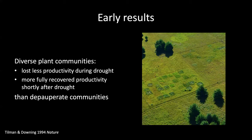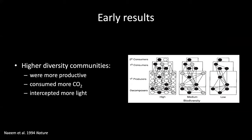Two high-profile early studies were published in Nature in 1994. One study by Dave Tilman and John Downing found that diverse plant communities lost less productivity during a drought and more fully recovered productivity shortly after, compared to species-poor plant communities — based on a reanalysis of data from a fertilization experiment at Cedar Creek. In the other paper, Shahid Naeem and others reported that biodiversity loss could reduce several ecosystem functions, including primary productivity, based on a microcosm experiment that manipulated diversity within multiple trophic levels of a food web.